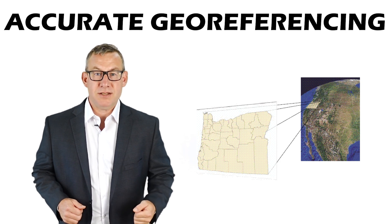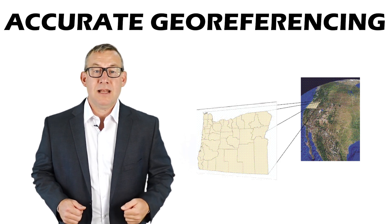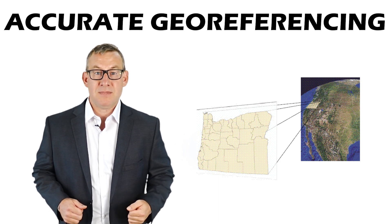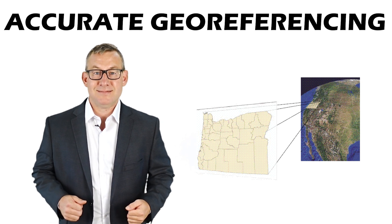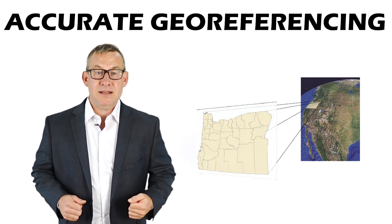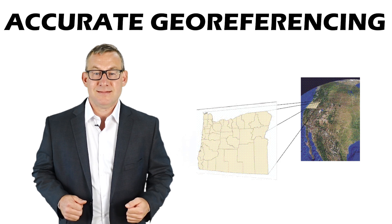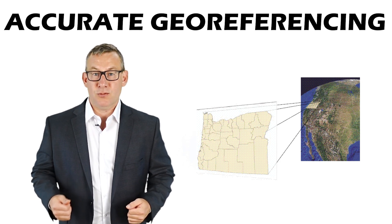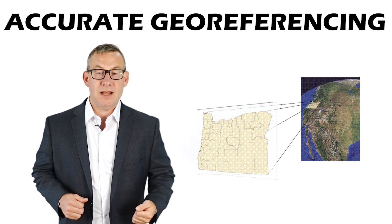Accurate geo-referencing is accomplished by digitizing in the correct coordinate system, digitizing consistently, digitizing enough vertices, analyzing the root mean square error, and setting fuzzy tolerance and snapping appropriately.